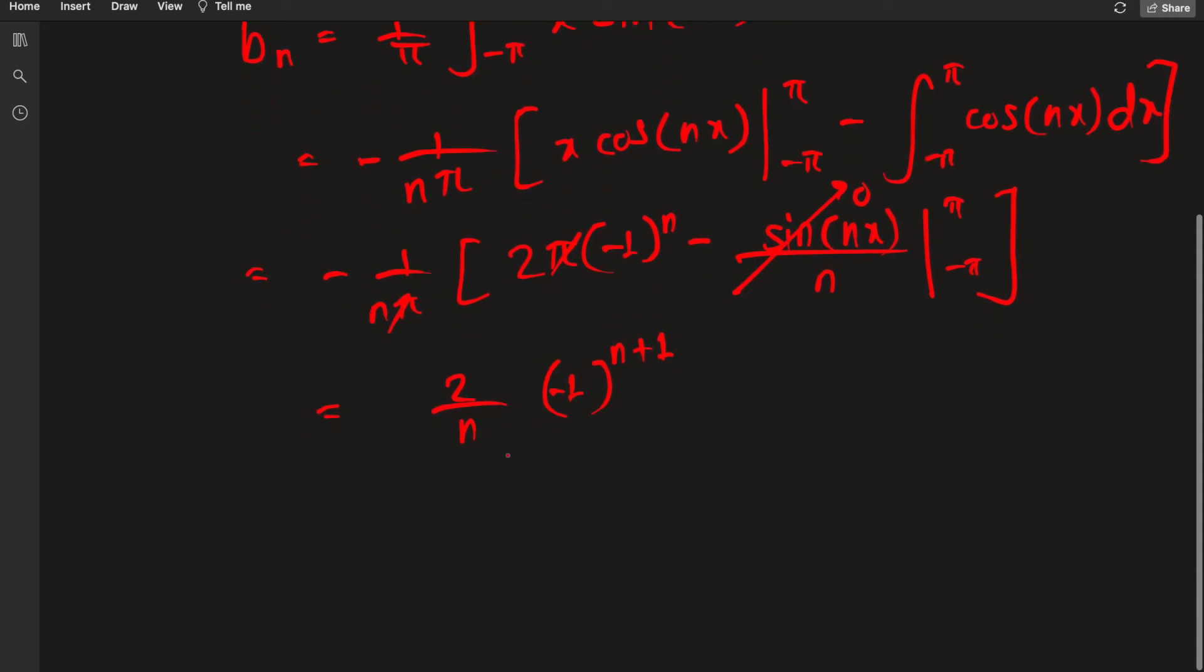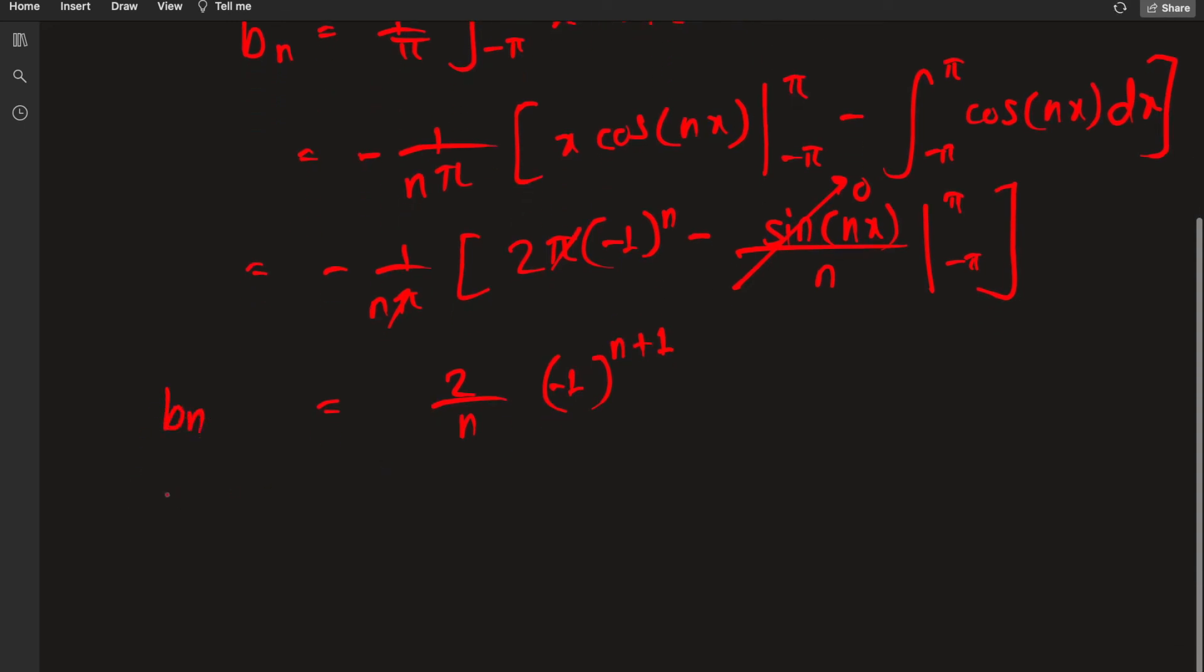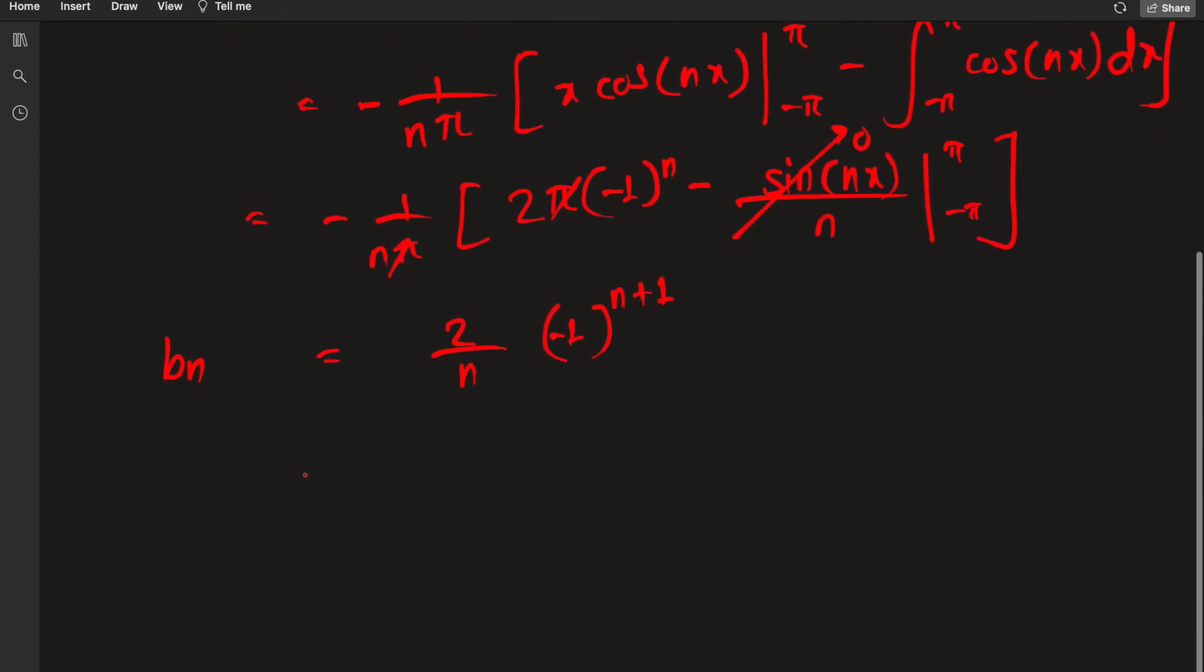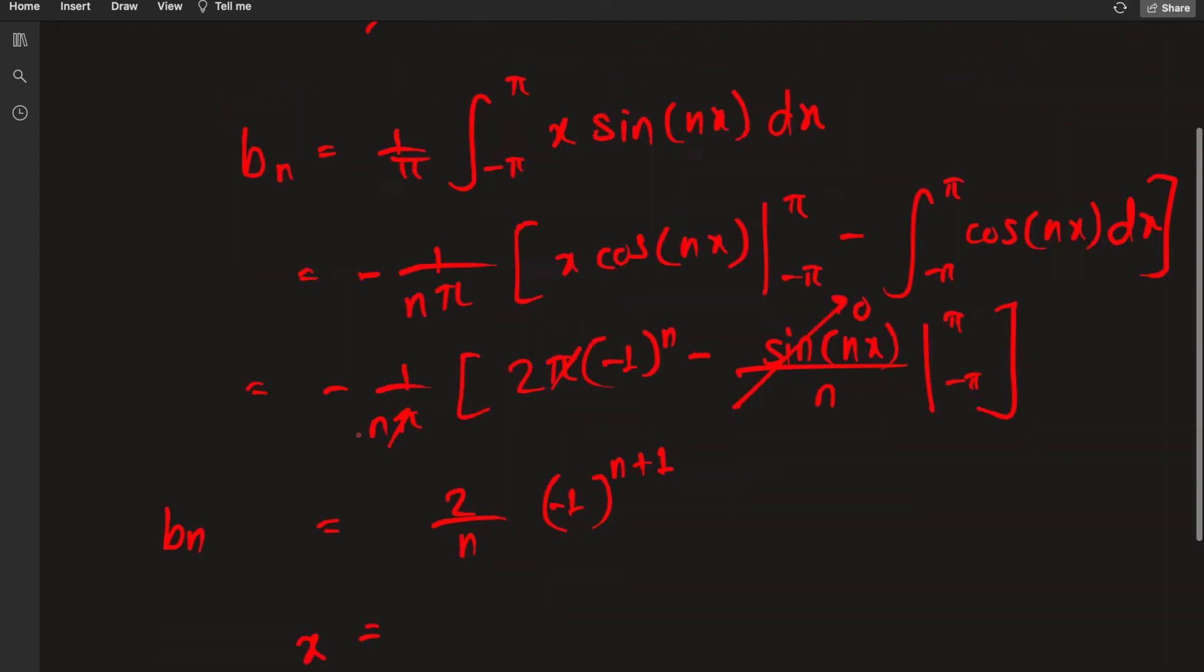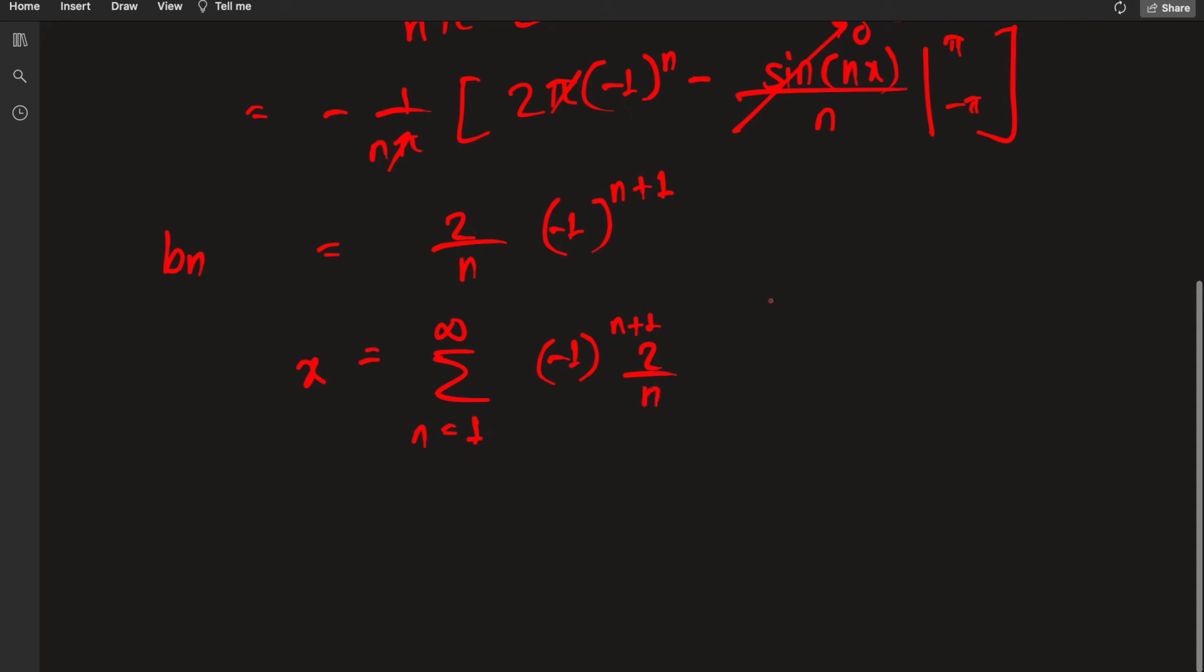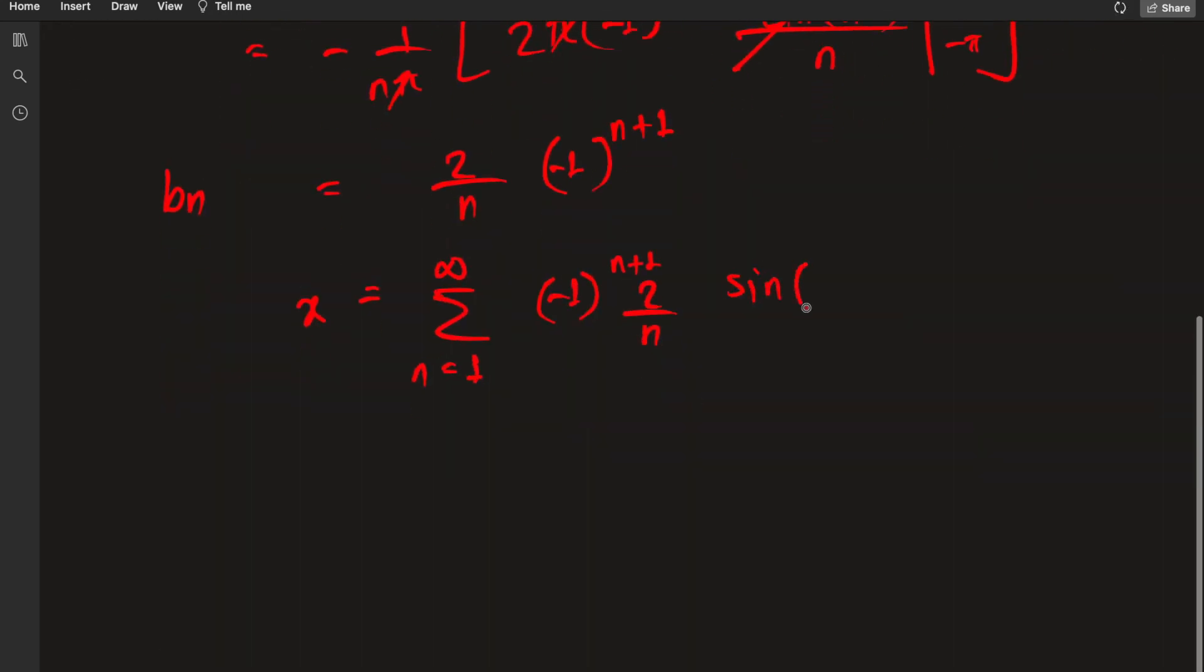Finally we have 2 over n, π's will cancel out, negative one with another negative one, we get (-1)ⁿ⁺¹, and that is your bₙ coefficient. Now we know values: a₀ is zero, aₙ is zero, we just have a value of bₙ. So this means f(x), which is x, is just equal to the sum from n equals 1 to infinity of this guy: (-1)ⁿ⁺¹ times 2 over n times sine of nx on the interval negative π to π. That's the Fourier series expansion of x.